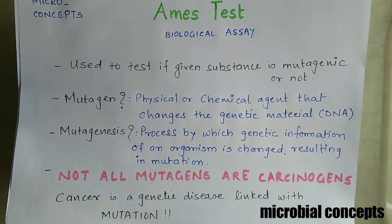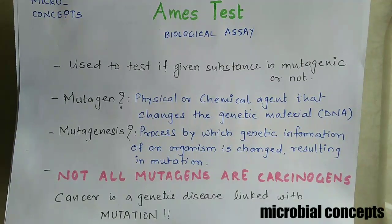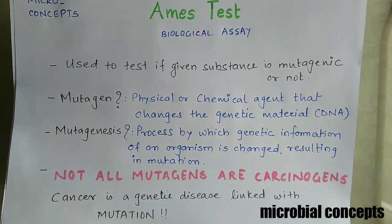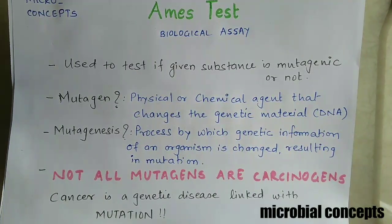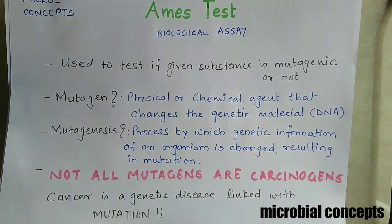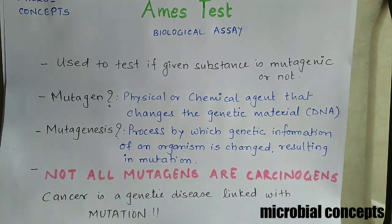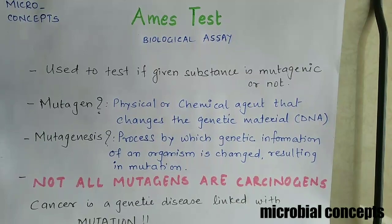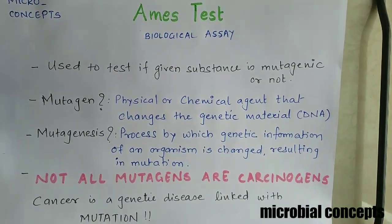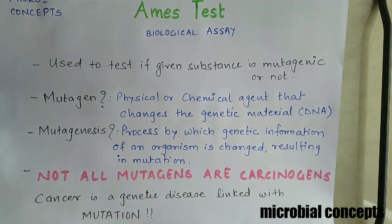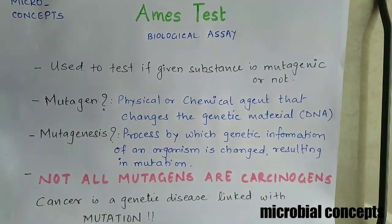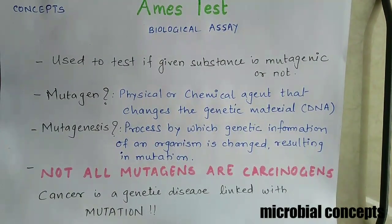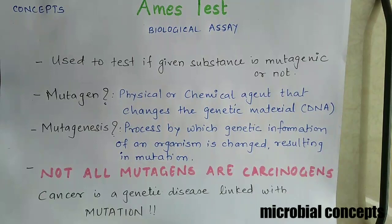Hello and welcome to Micro Concepts. Today we are going to learn about the Ames test, also known as the Ames test. This is a biological assay used to test if a given substance is mutagenic or not. A mutagen is a physical or chemical agent that changes the genetic material, which is the DNA. The process which changes this genetic information of an organism is known as mutagenesis, resulting in a mutation.